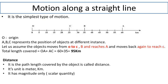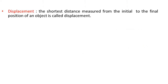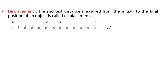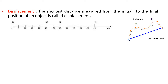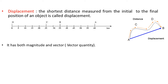If our initial position is O and we travel via A back to C, our initial position is O and our final position is C. The shortest distance from O to C is called displacement. The shortest distance measured from the initial to the final position of an object is called displacement. For example, going from A to B — the path via C to D is the longer distance, but the straight shortest path is the displacement. Displacement has both magnitude and direction, therefore it is a vector quantity.